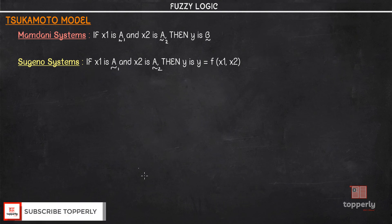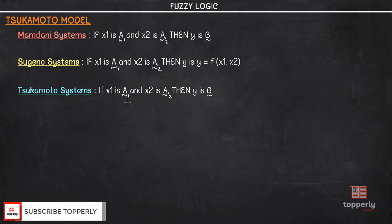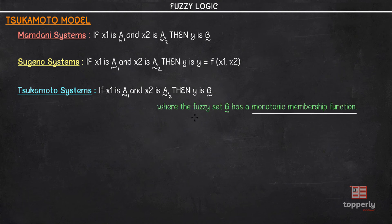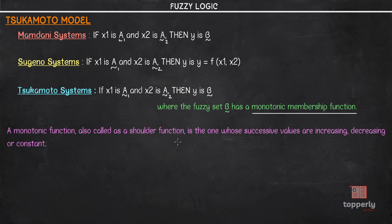However, in the case of the Sukumoto model, our antecedents are fuzzy sets or fuzzy numbers and our consequent is also a fuzzy set. But the only difference is that the membership function of the consequent fuzzy set will be a monotonic function. That is, the consequent of each fuzzy rule is represented by a fuzzy set having a monotonic membership function. A monotonic function, also called a shoulder function, is one whose successive values are increasing, decreasing, or constant.